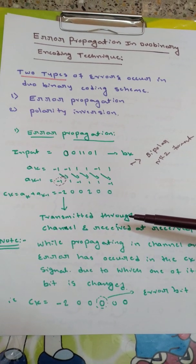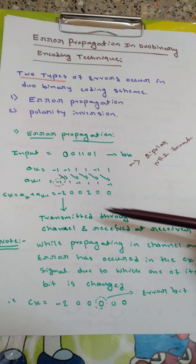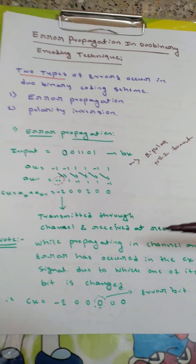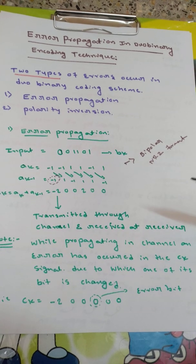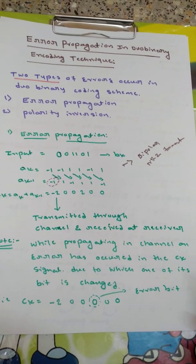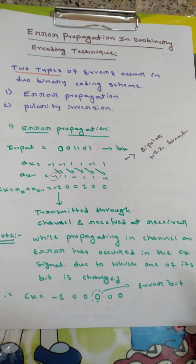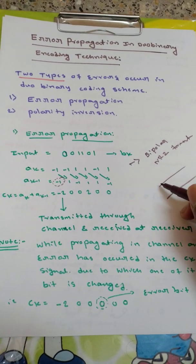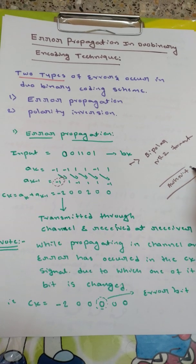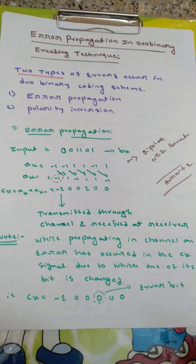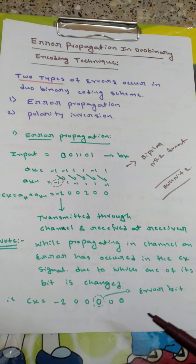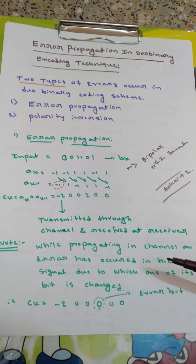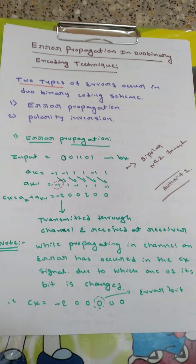Then these are the transmitted bits. So this CK will be transmitted through channel and received at the receiver. The point here to note is that while propagating in channel an error has occurred in the CK signal, due to which one of its bit is changed. We know that channel is not our ideal channel. If you transmit in any of our real channel, then there will be additive white Gaussian noise plus environmental noise and other things. That's why it is assumed that one of the bit of CK is changed while propagating through the channel.